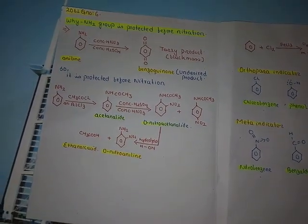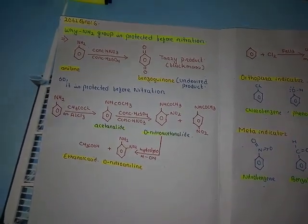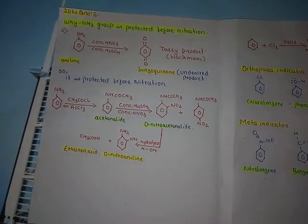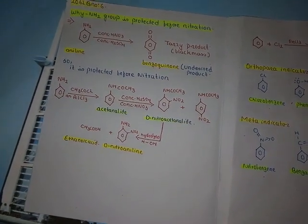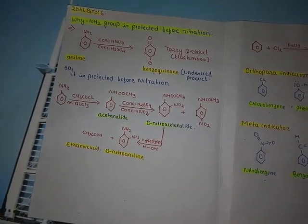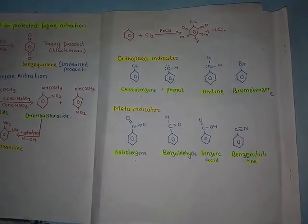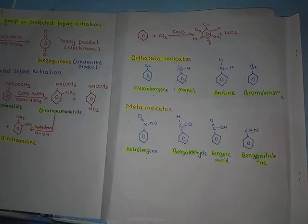Benzene reacts — one product attacks the aromatic ketone. We are going to discuss nitrogen directing. For the ortho, para, and meta positions of the aromatic compound, co-nitration gives ortho, meta, and para products. The NH2 group is protected before nitration for this reason.